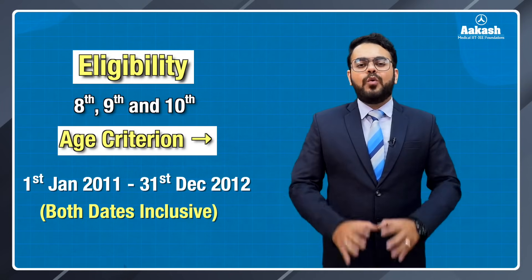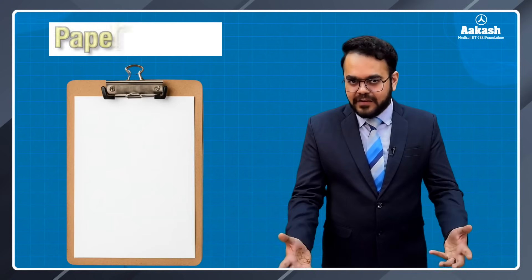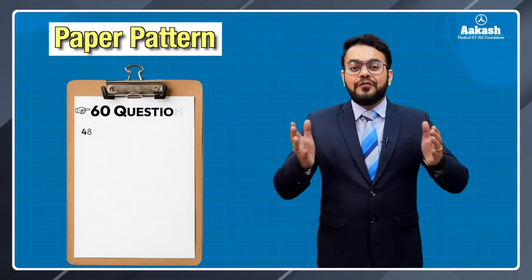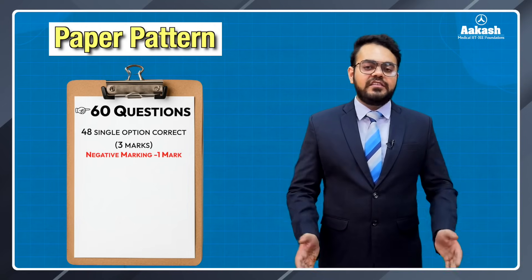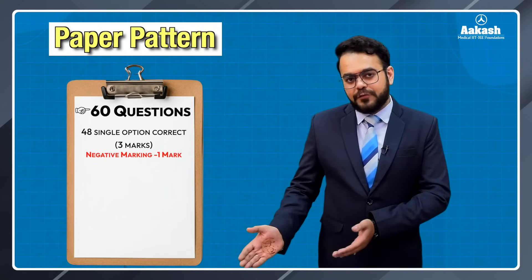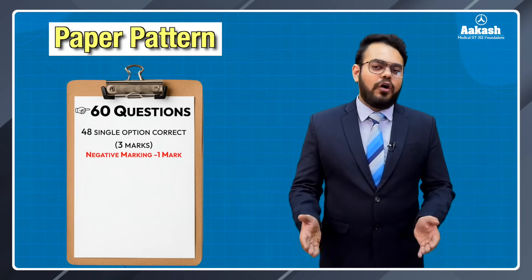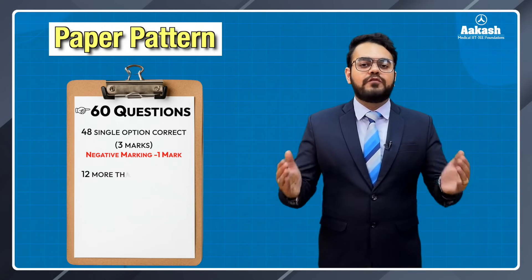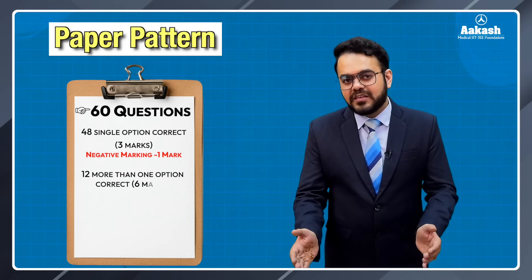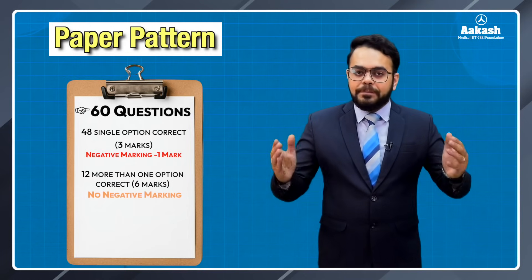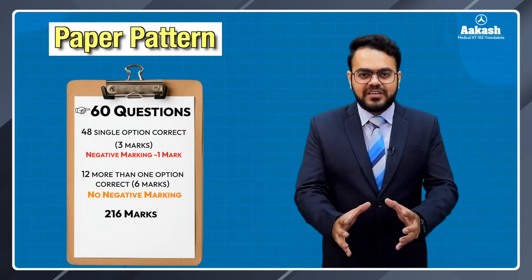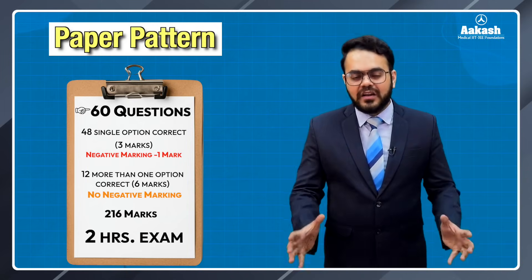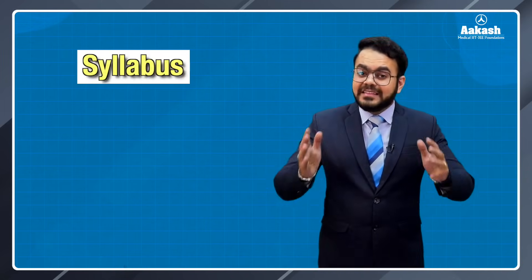Now let's discuss the paper pattern. We have two types of questions: 48 are single option correct and they carry 3 marks each. The second type has 12 questions, carrying 6 marks each. In total, the paper is of 216 marks and the time duration is 2 hours.